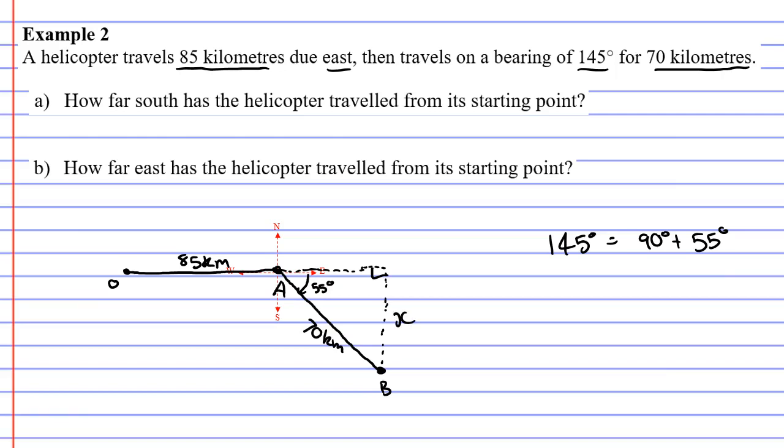So X would be your opposite. It's opposite the 55 degrees and 70 is the hypotenuse. Using SOHCAHTOA at the top, we are using the first part, because we've got an opposite and a hypotenuse. So we're using sine. Sine of 55 equals opposite over hypotenuse, which is X over 70. We slide the 70 to the front. 70 times sine 55 equals X.